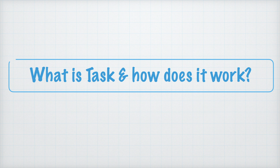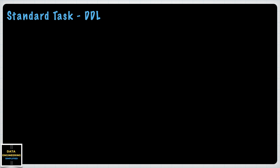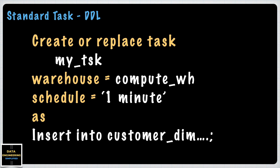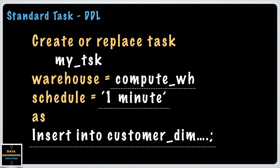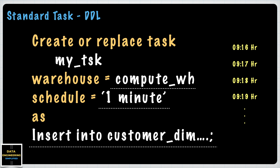Let's understand what a task is and how it works. Task is a first-class object residing within a schema. The SQL syntax is very simple and clean for a standalone task. Provide a task name, followed by a warehouse name, at what frequency the task should run, and what SQL statement it should execute. This DDL says the task should use Compute Virtual Warehouse to run an insert statement every minute from the time it is active. This non-cron based syntax runs relative to when the task is started.